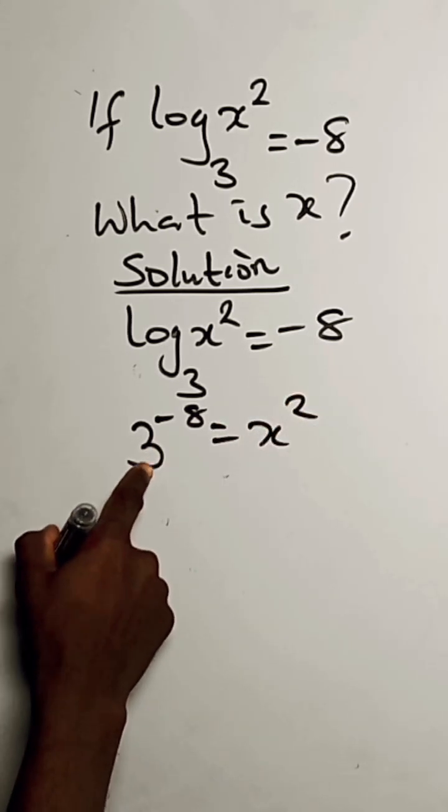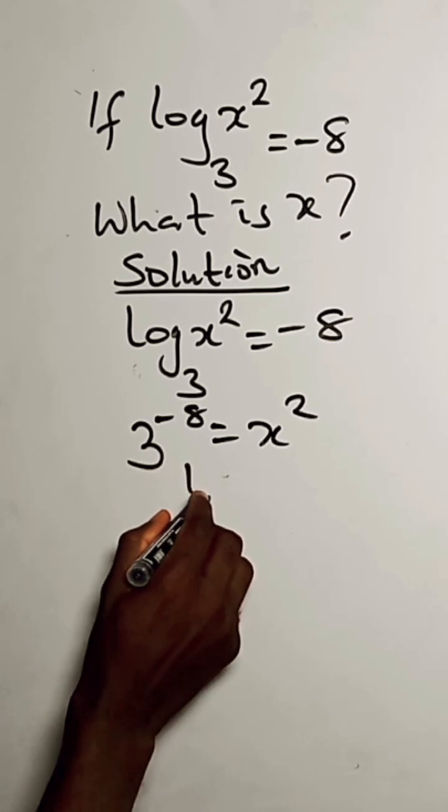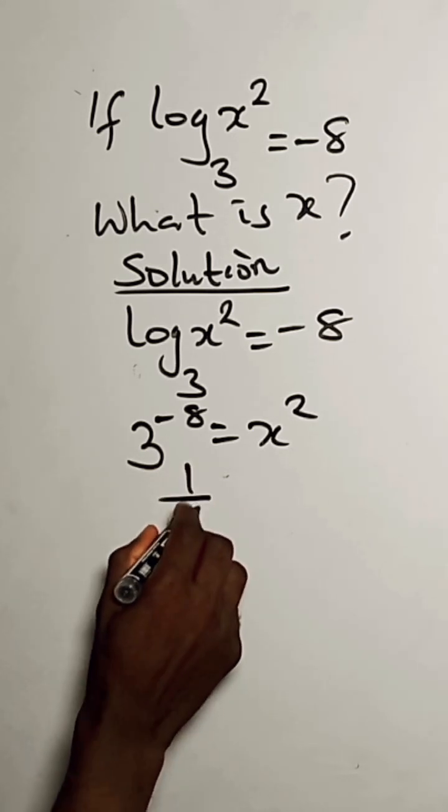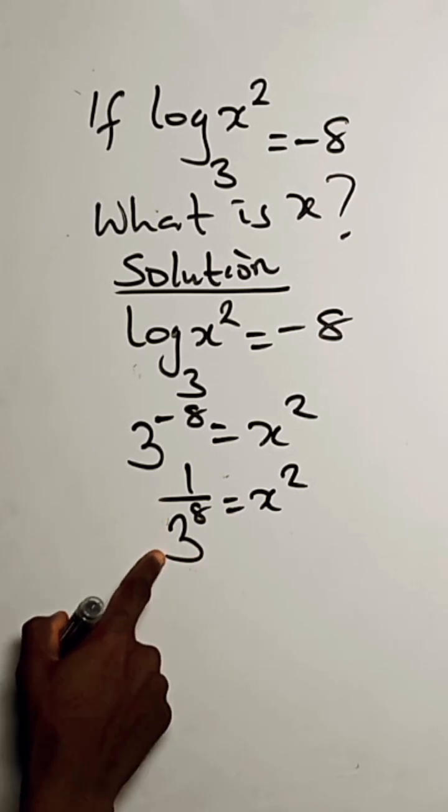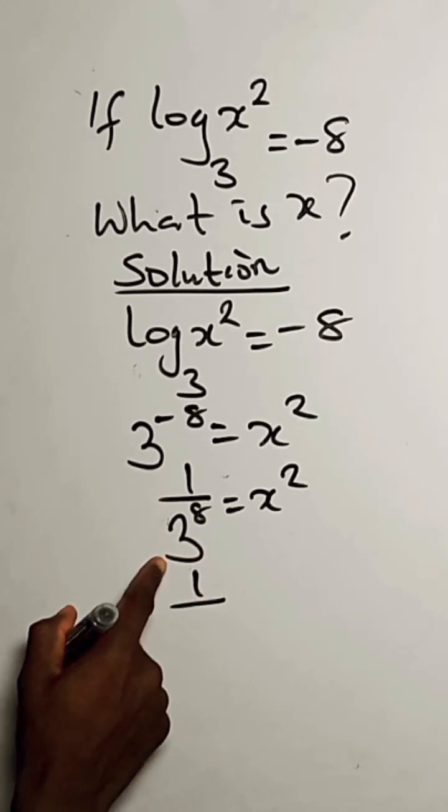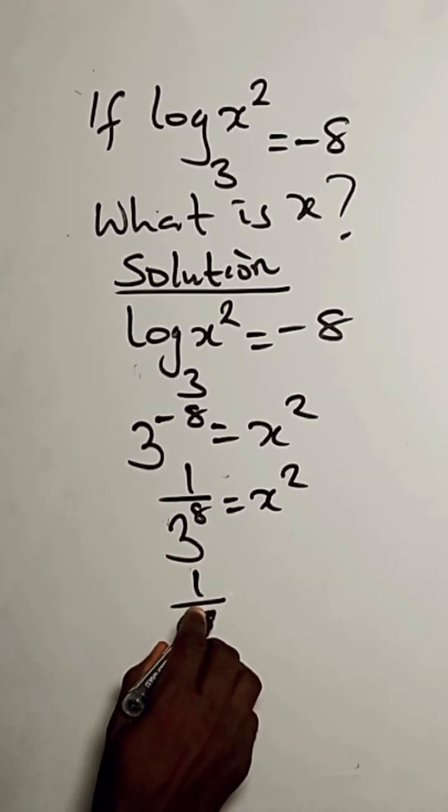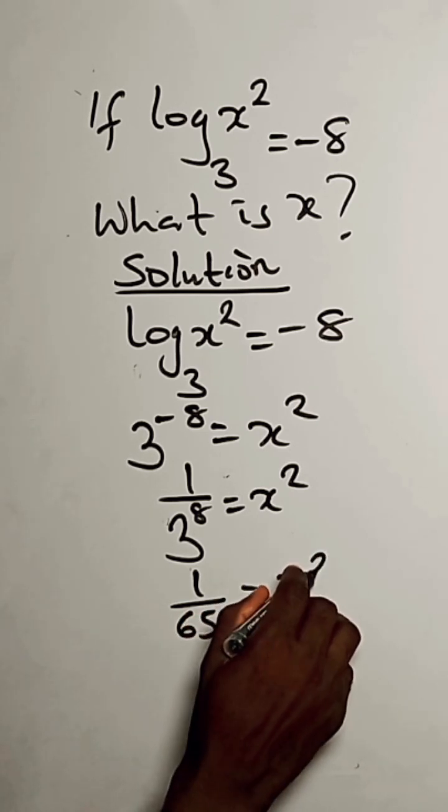So for 3 to the power minus 8, we have it as 1 over 3 to the power 8 equals x squared. So here we have this as 1 divided by 6,561 equals x squared.